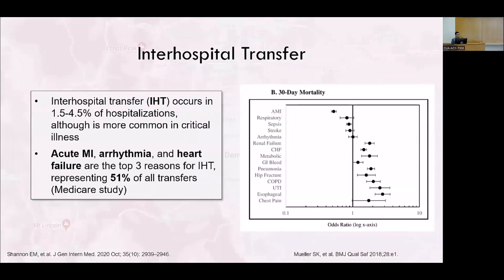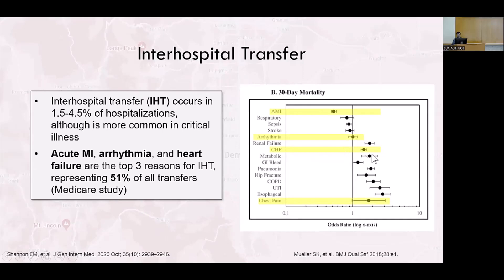This is not a very well-studied topic, but some studies have shown that transfer occurs one to four percent of the time, although it tends to be more common in critical illness. Cardiology diagnoses are actually the most common reason — almost half of transfers are for a cardiology reason. One Medicare-based study that propensity score matched transferred and non-transferred patients suggested perhaps increased 30-day mortality in patients with heart failure, with improved mortality perhaps in patients with acute MI that are transferring.